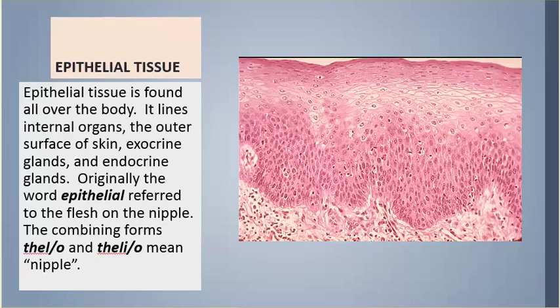Epithelial tissue is found all over the body. It lines internal organs, the outer surface of skin, exocrine glands, and endocrine glands. Originally, the word epithelial referred to the flesh on the nipple. The combining forms thelo and thelio mean nipple.